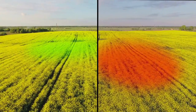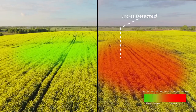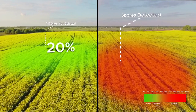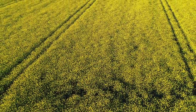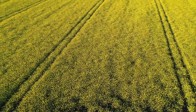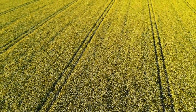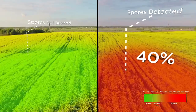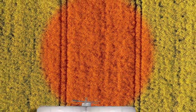The percentage of petals tested that had spores correlates to the risk of the crop developing disease. If spores have been detected on less than 20% of petals, then there is a low risk of having yield losses that warrant the cost of fungicide at this time. Another sample can be collected and tested in several days to see if the risk level has changed. If spores have been detected on more than 40% of petals, then there is a high risk of disease causing yield losses above the cost of spraying.